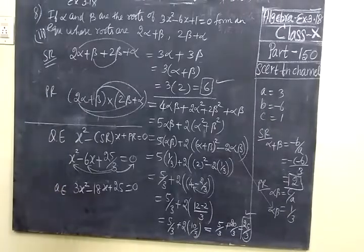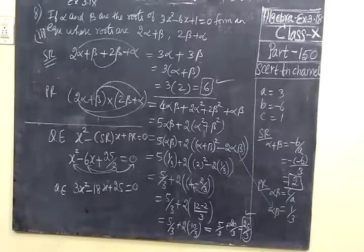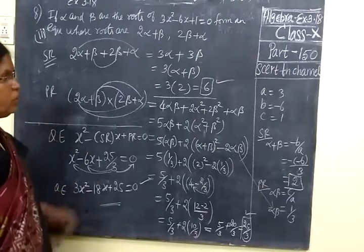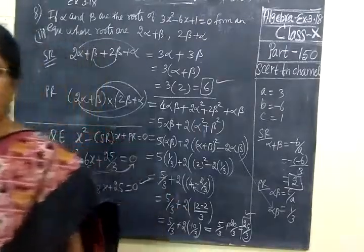Just to be checked the answer: 3 x squared minus 18x plus 25 equal to 0. This may come under compulsory question. Please kindly go through it. Thank you students.